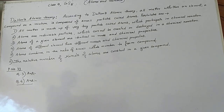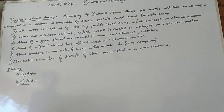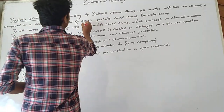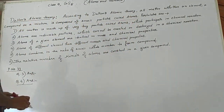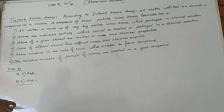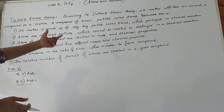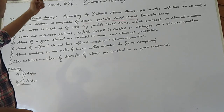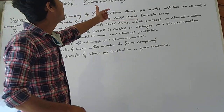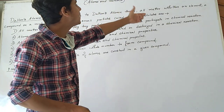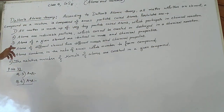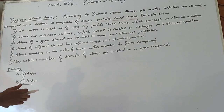According to Dalton's theory, all matter — whether an element, a compound, or a mixture — is composed of small particles called atoms. Atoms are the smallest particles of matter and cannot be divided further.